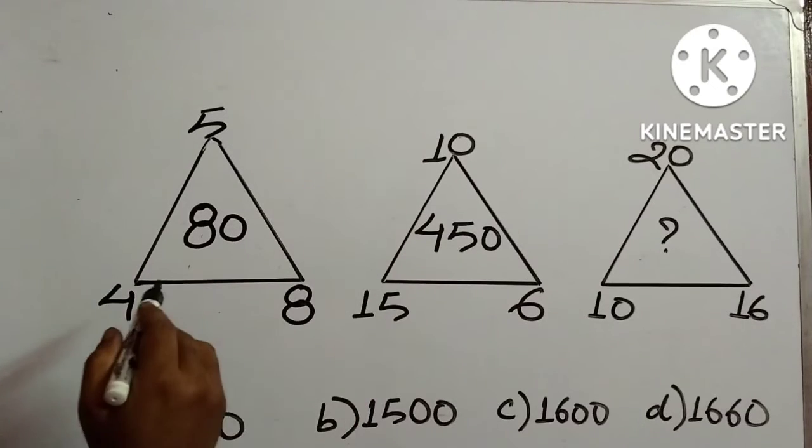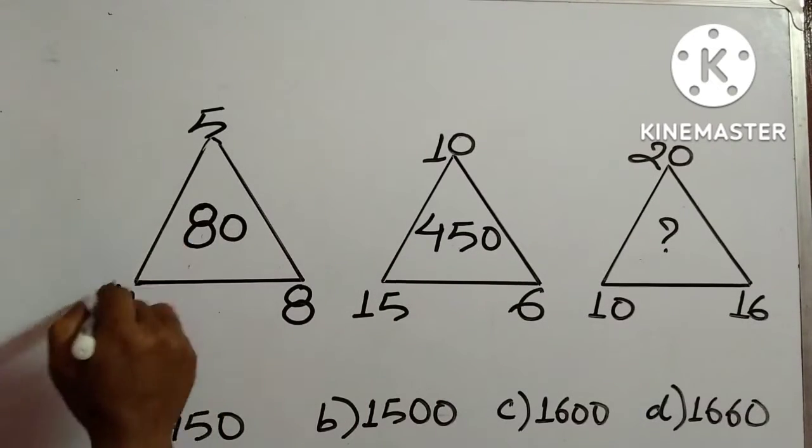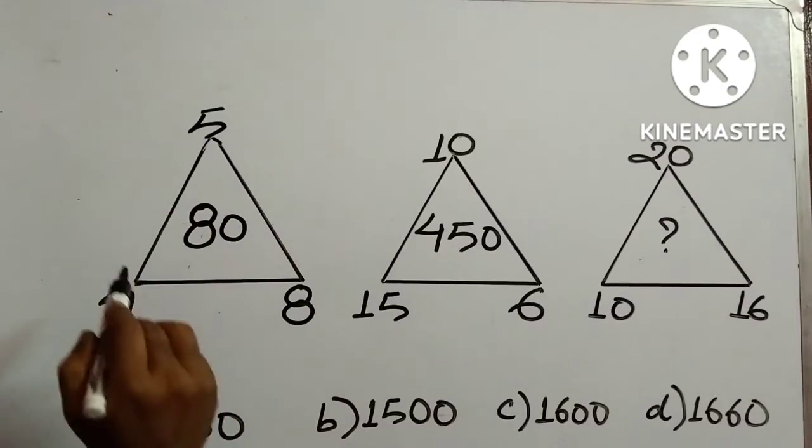In this question, three triangles are given. In the first triangle, 4, 5, 8, and 80 is given.